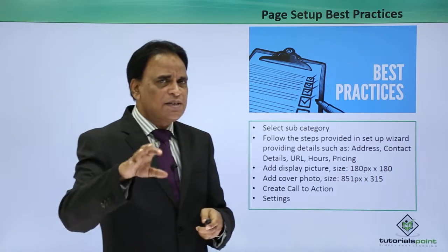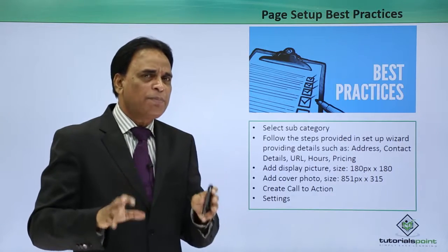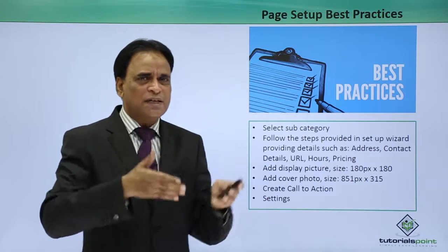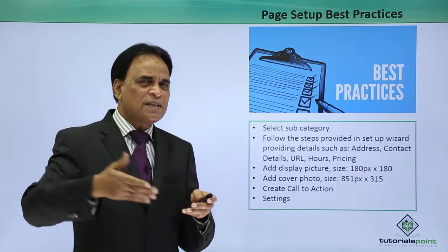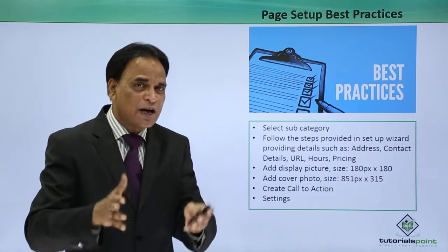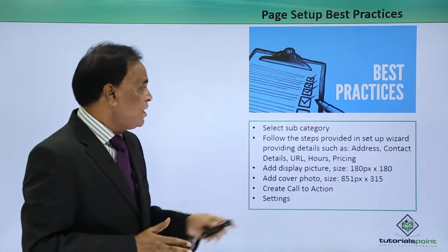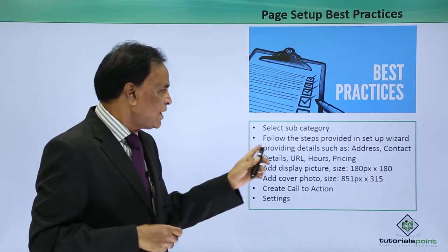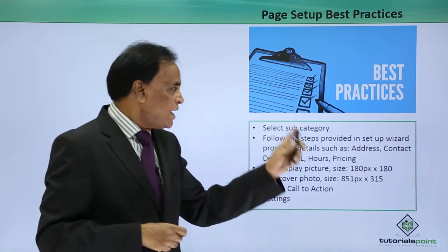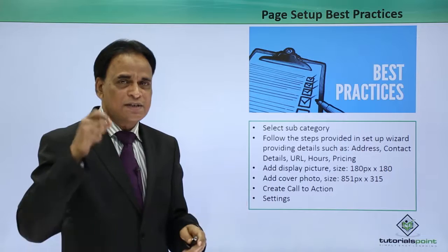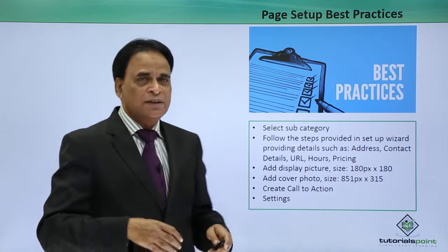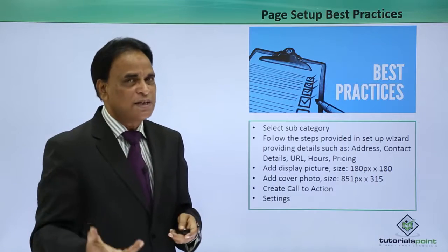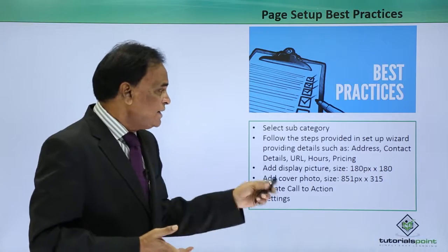Here are the best practices you can implement to make your page much better. First, select a subcategory — once you select a particular category of your business, select the subcategory to narrow down on a particular industry. Then follow the steps provided in the setup widget, providing details such as address, contact details, the URL of your website, the number of hours you work, and what pricing is involved if you are selling certain products.